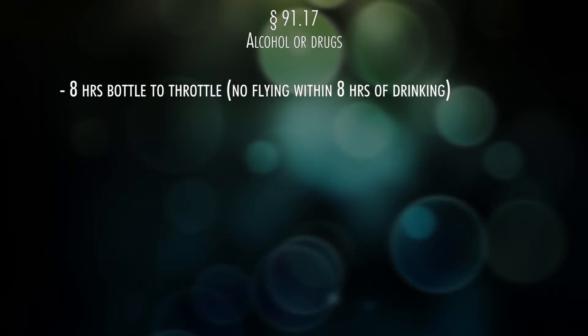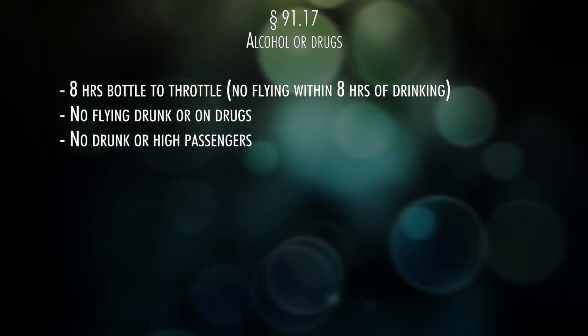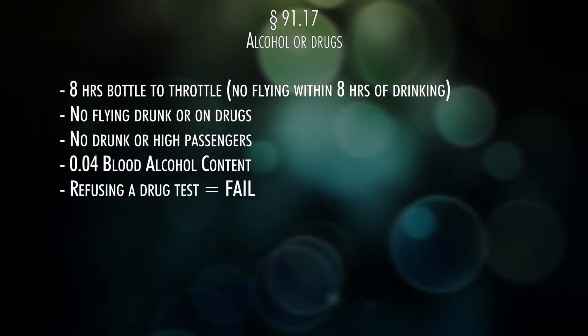91.17: Alcohol and drugs. You need eight hours from bottle to throttle. You can't be under the influence of alcohol or drugs. You can't take anybody with you who's under the influence of either one of those things, and the blood alcohol content limit is 0.04, which is half of what it is for driving. Also, if you're asked to do a drug test, refusing to do so is a failure of the drug test.